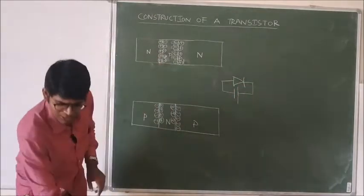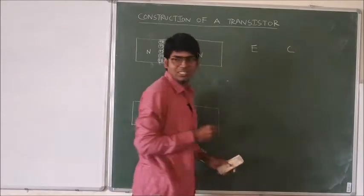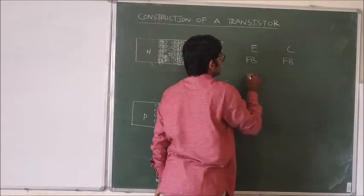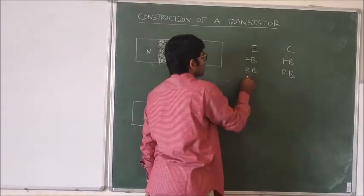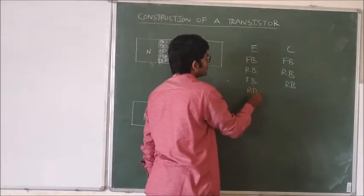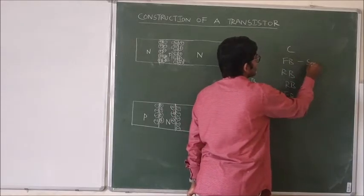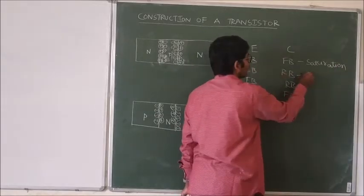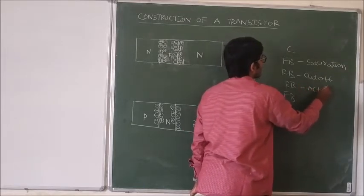There are two junctions: one is the emitter junction and the second one is the collector junction. The emitter junction can be forward biased and the collector junction can be forward biased; or the emitter junction can be reverse biased and the collector junction can be reverse biased; or the emitter junction can be forward biased and the collector junction can be reverse biased. We call these regions saturation, cut-off, and active region.